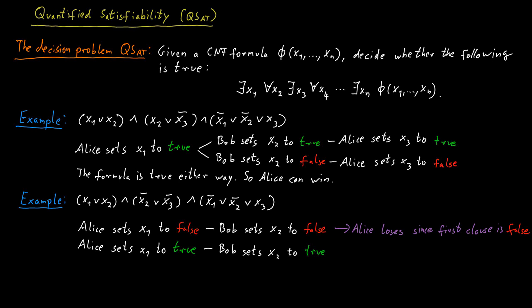If x2 is set to true, then the only way to satisfy the second clause of the formula is to set x3 to false. So that's what Alice would have to do.